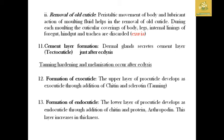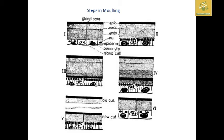After removal of the old cuticle, dermal glands secrete a cement layer over the new cuticle just after ecdysis. Tanning, hardening, and melanization then occur. The upper layer of the procuticle develops into exocuticle through addition of chitin and sclerotin — a process known as tanning. The lower layer of the procuticle develops into endocuticle through addition of chitin and the protein arthropodein, increasing the thickness of the endocuticle.